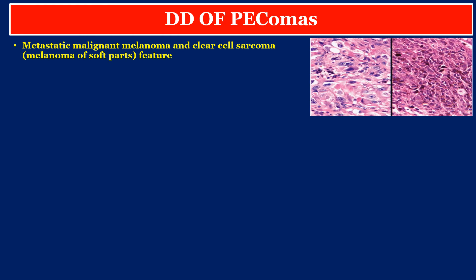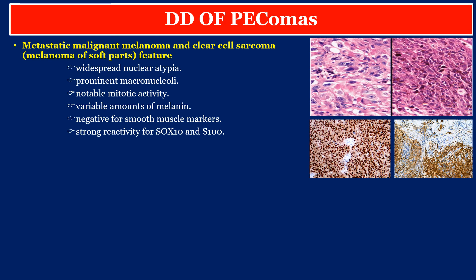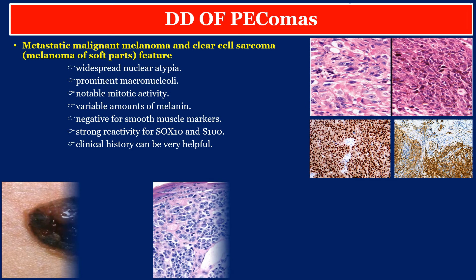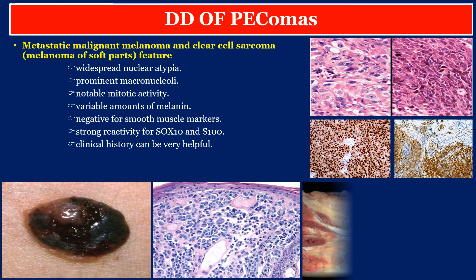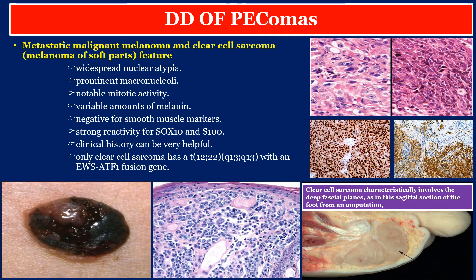Metastatic malignant melanoma and clear cell sarcoma (melanoma of soft parts) feature widespread nuclear atypia, prominent macronucleoli, notable mitotic activity, variable amounts of melanin, negativity for smooth muscle markers, and strong reactivity for S100. Clinical history, such as known skin melanoma, can be very helpful. Clear cell sarcoma characteristically involves the deep fascial planes. Only clear cell sarcoma has a translocation t(12;22) with an EWSR1-ATF1 fusion gene.